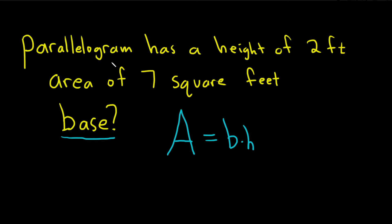So it says the parallelogram has a height of 2 feet, so that's going to be 2, our H. Just replace the H with 2, and the area is 7 square feet, so the area here is 7.